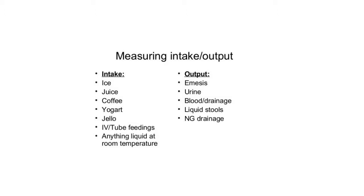When recording intake output, intake includes any ice, juice, coffee, yogurt, jellies, intravenous infusions, nasogastric tube feedings, or any liquid at room temperature given to the patient — all must be recorded. Output includes vomit, urine, blood from wounds, liquid stools, and anything coming out from the NG tube. We need to measure how many milliliters are coming out and record it on the intake output record chart.